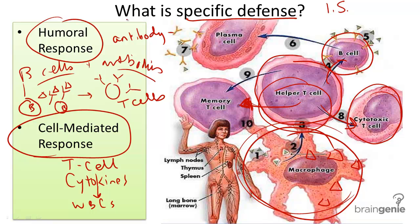Remember that none of these white blood cells, called lymphocytes, are needed if the pathogens cannot first get through the first line of defense. Nonspecific defenses, such as your skin or mucous membranes, are key. But if these don't work to prevent pathogens, be glad that you have this powerful backup strategy.